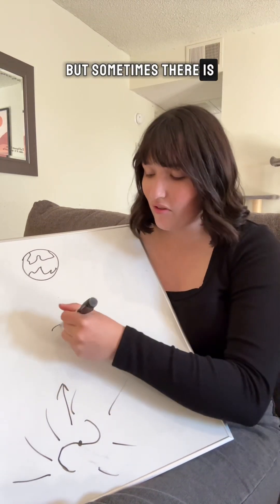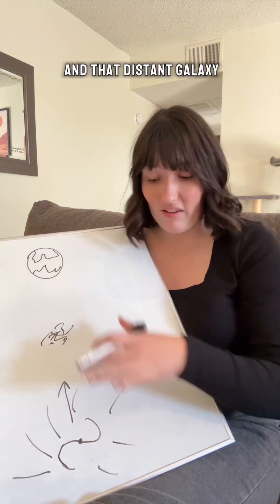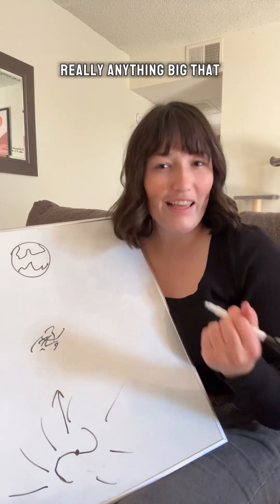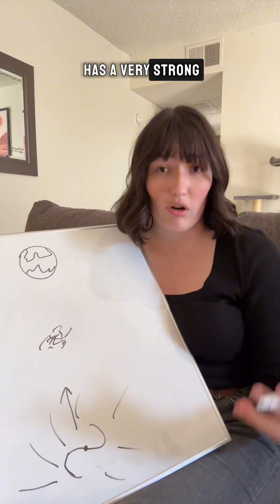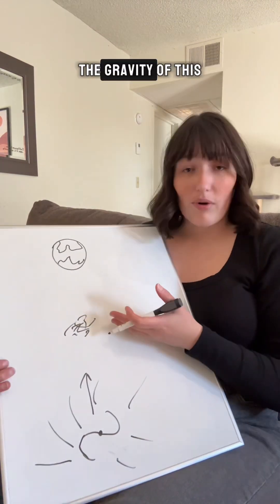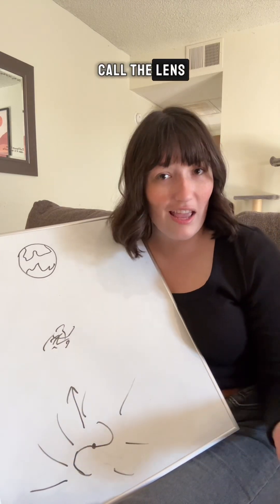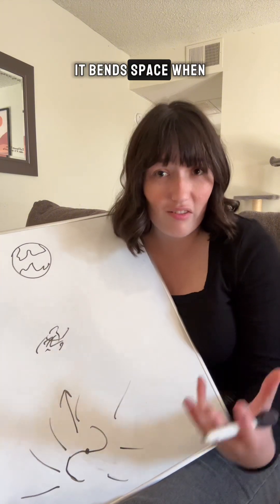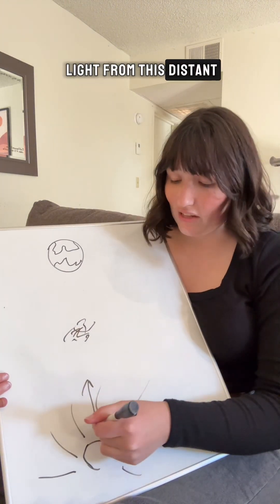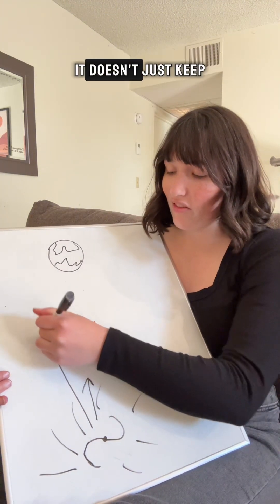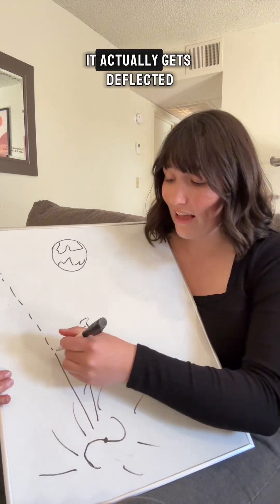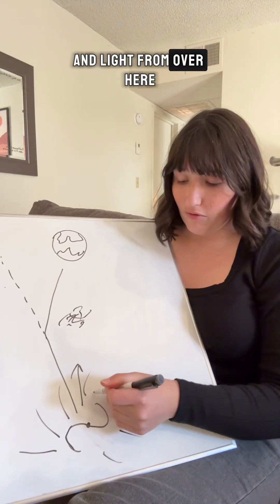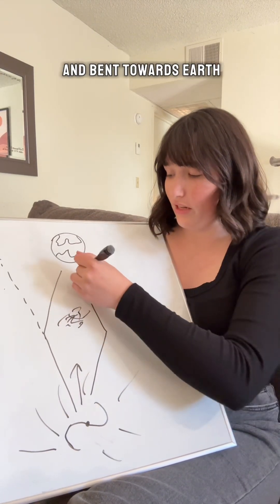But sometimes there is stuff in between us and that distant galaxy. This stuff could be another galaxy, a cluster of galaxies, really anything big that has a very strong gravitational influence. The gravity of this in-between object, which we're going to call the lens, literally warps the fabric of space-time, it bends space. When light from this distant galaxy goes past the lens, it doesn't just keep going off into space in a straight line, it actually gets deflected by the lens's gravity. And light from over here can also get deflected and bent towards Earth.